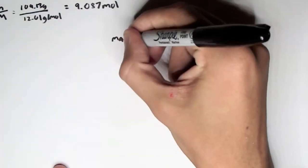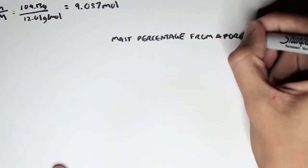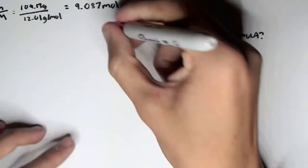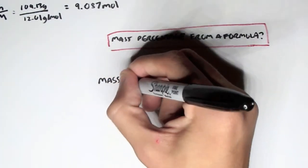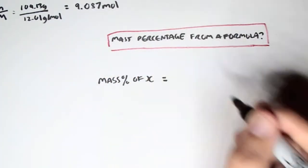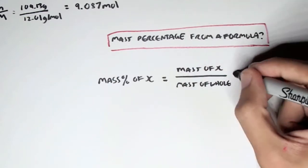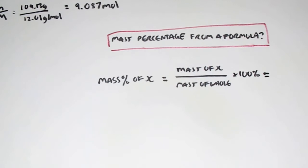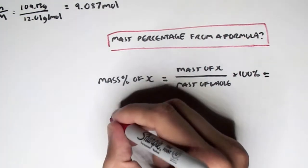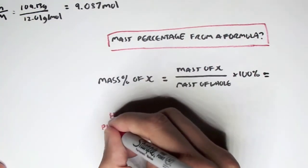Next, let's talk about mass percentage from a formula — finding the mass percentage of a given element X from a particular substance. The mass percentage of X equals the mass of X divided by the mass of the whole substance, times 100 to give a percentage.